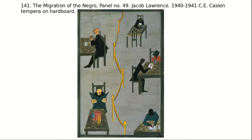Moving along: Jacob Lawrence and the Migration Series. He painted this in 1940 to 1941 and was known for his portrayal of African-American life — he was an African-American artist who grew up in Harlem. He would refer to his own work as dynamic Cubism, but we can also place him in the category of self-taught folk art and Harlem Renaissance art.